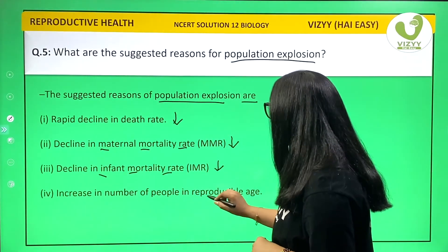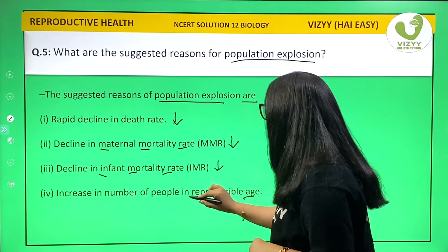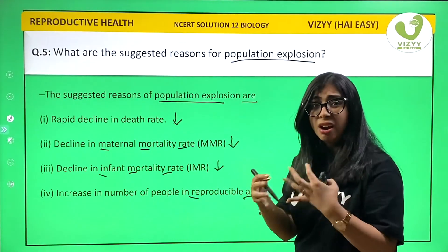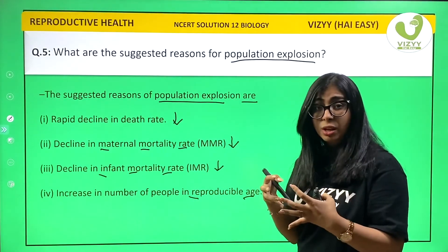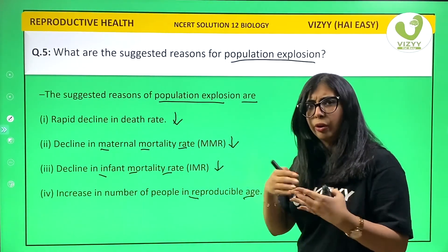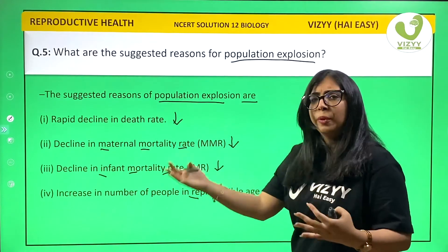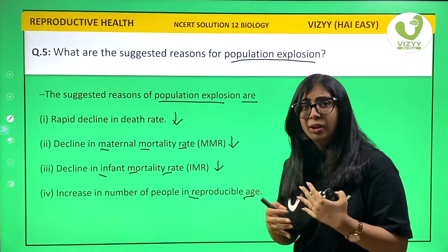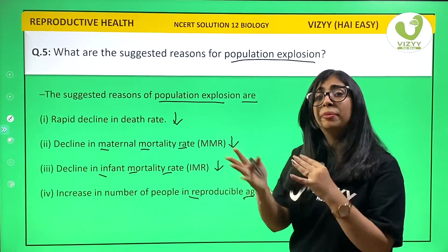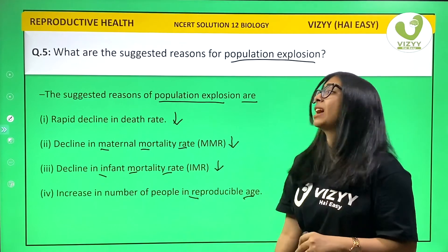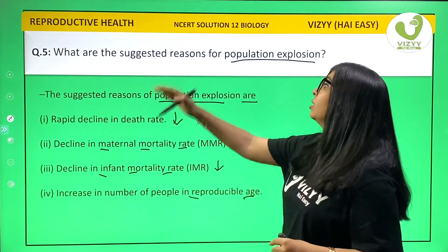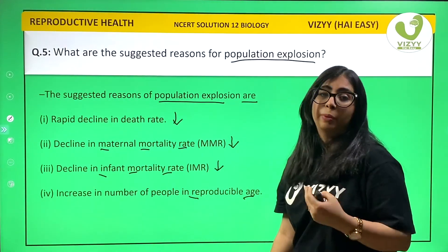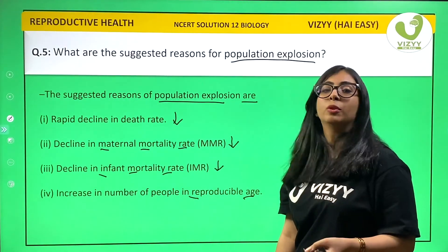And fourth, increase in the number of people in reproductive age. We have a very young generation — a high percentage of our citizens are in reproductive age, and that is the reason for our population explosion.